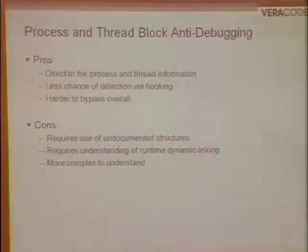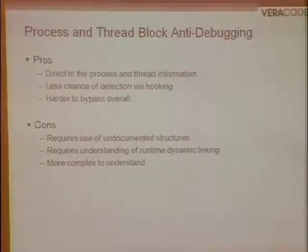Pros and cons of process/thread block detection: pros — we're going direct, avoiding APIs, with less chance of hooking and generally harder to bypass than API-based calls. Cons — we're using undocumented structures that can change at any time; if Microsoft modifies what the PEB looks like, these methods could break. They also use runtime dynamic linking, which can be harder to understand.